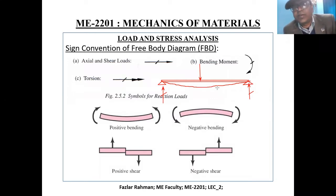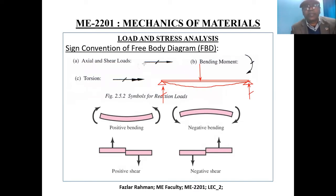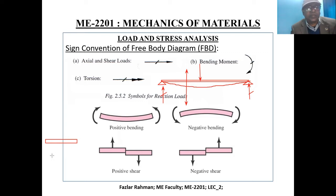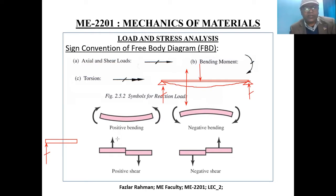We can explain it. If I start from the left side and cut this beam at a point, I can make a free body diagram on both sides. Let me take only the right side. What force do I have? An upward force — R1 or R2, whatever the value. Then I draw the right side portion, and on the right side, we have a reaction force.